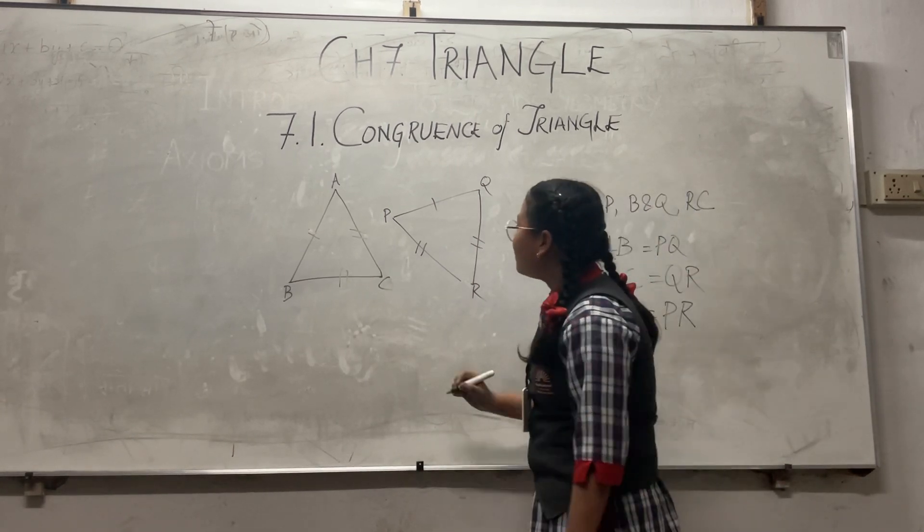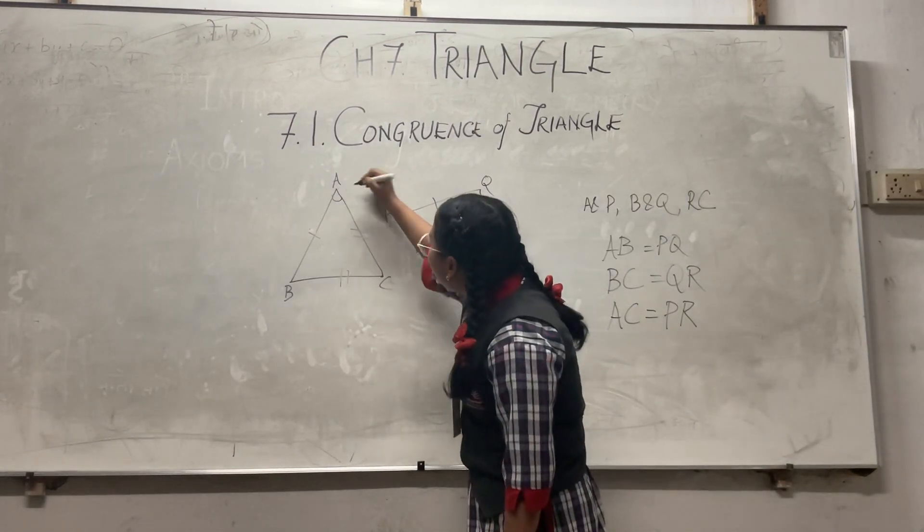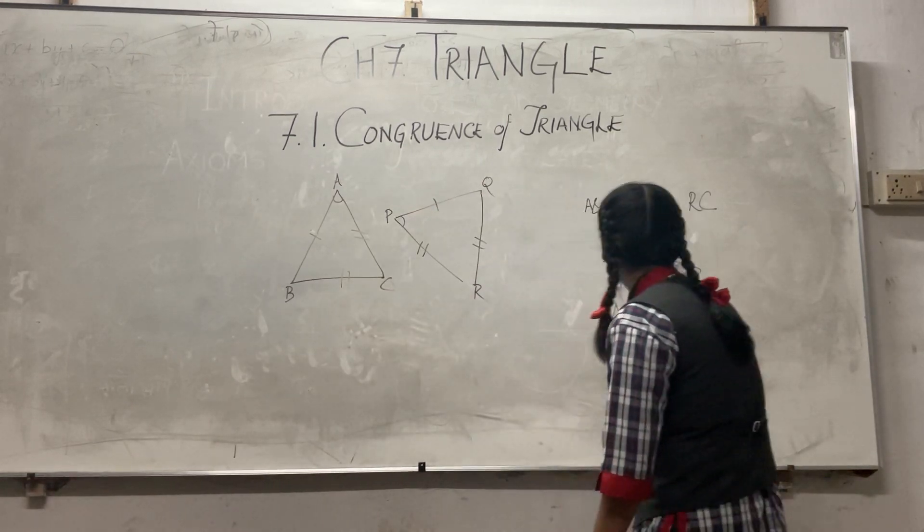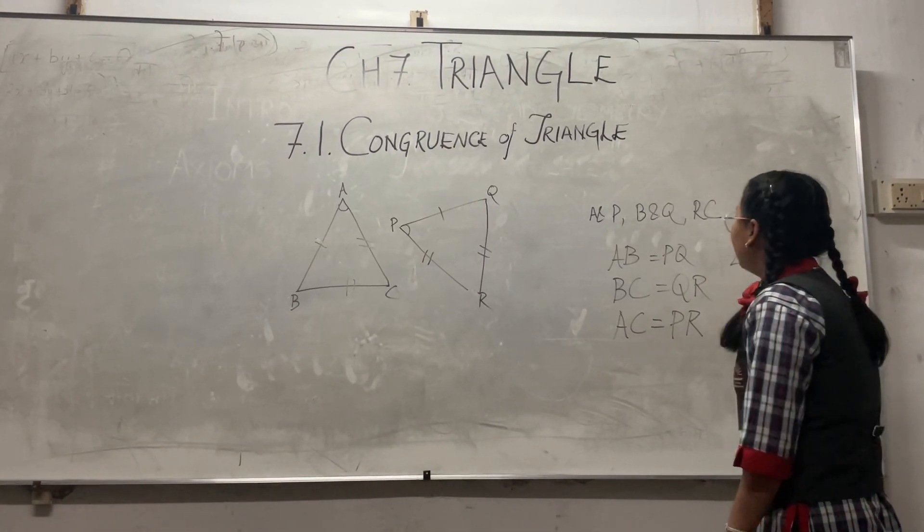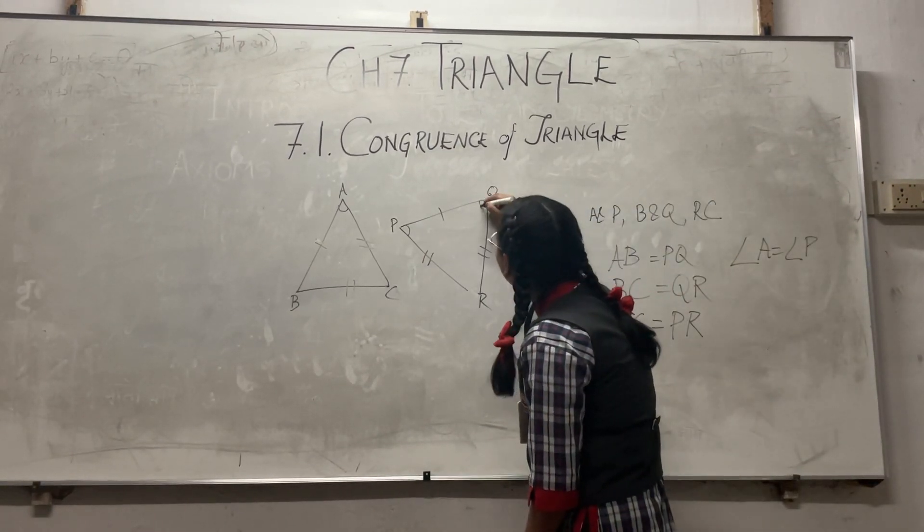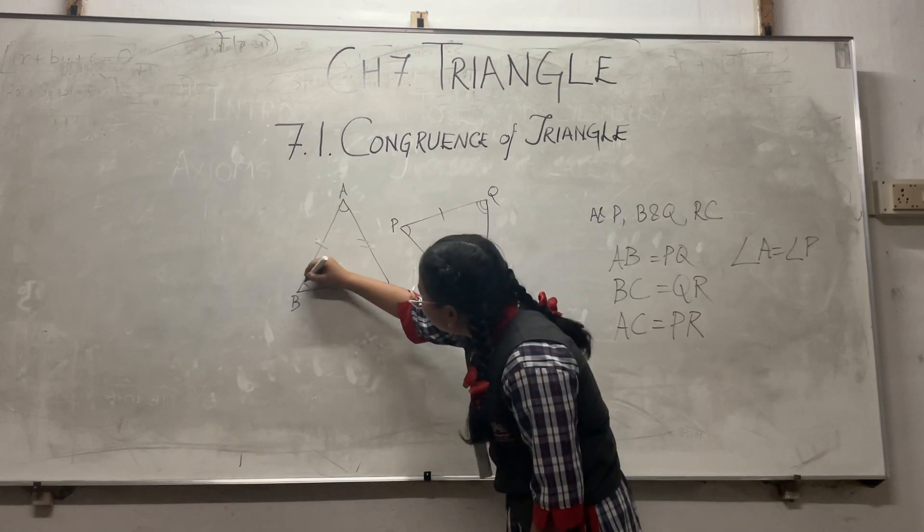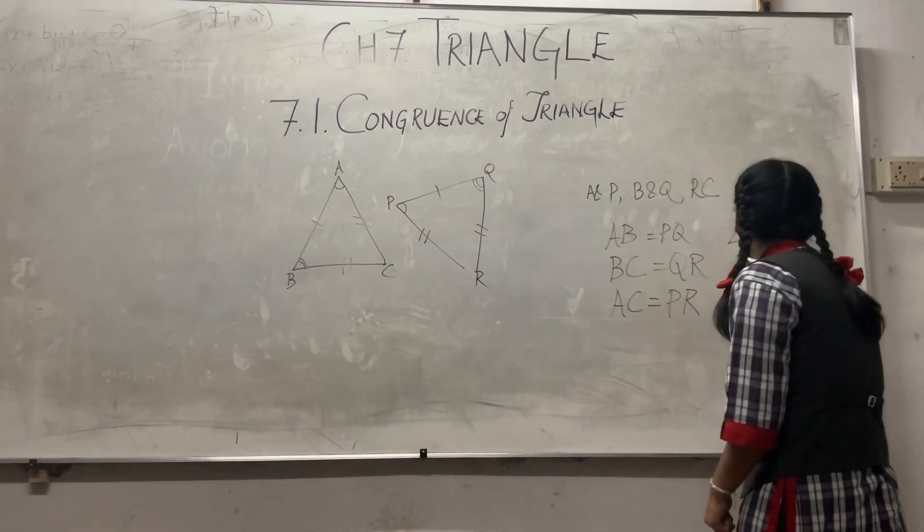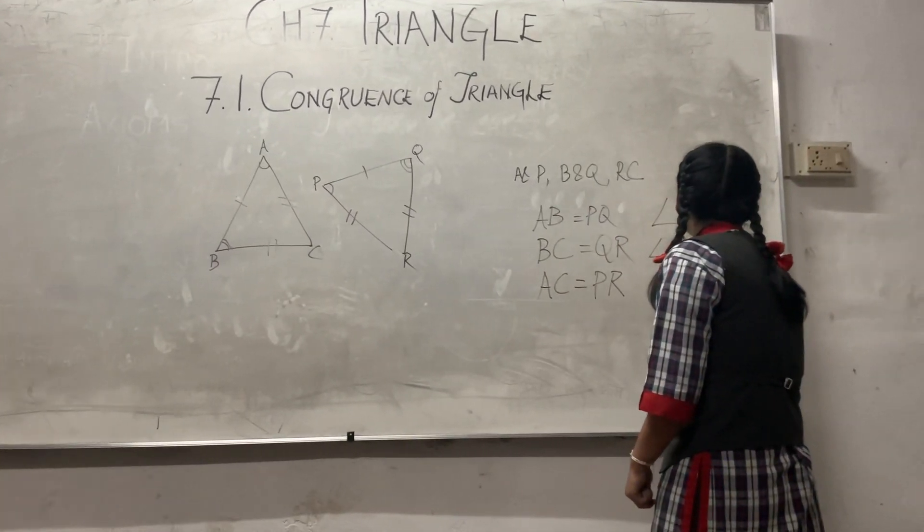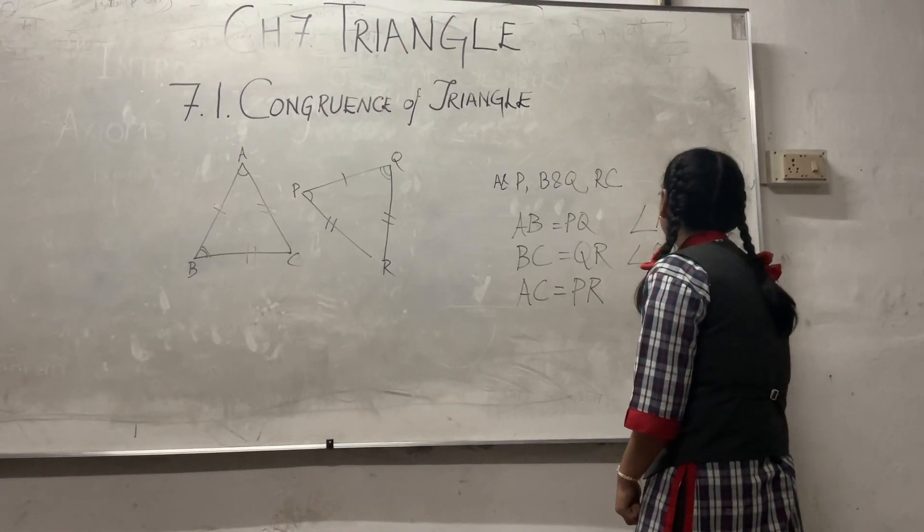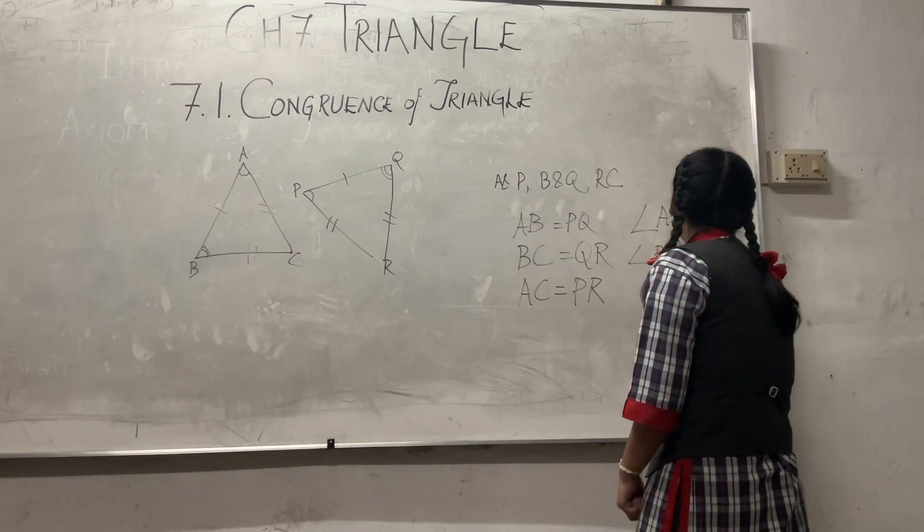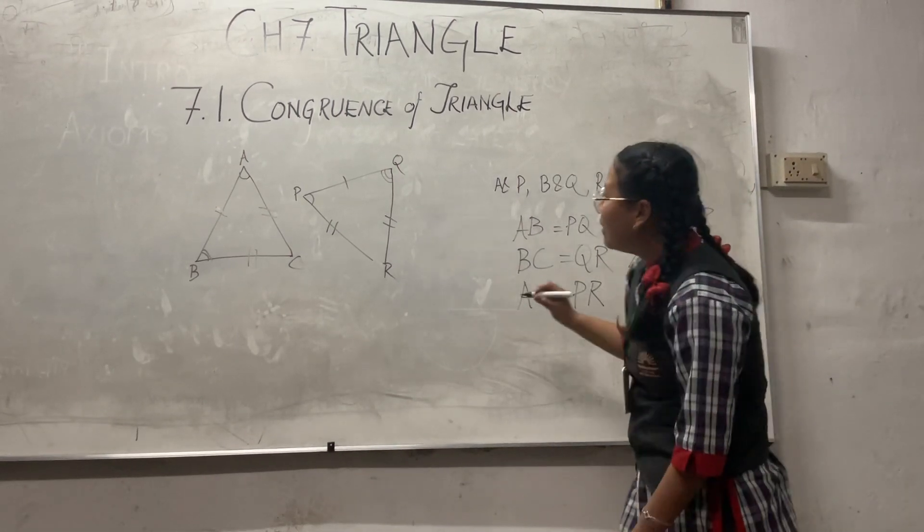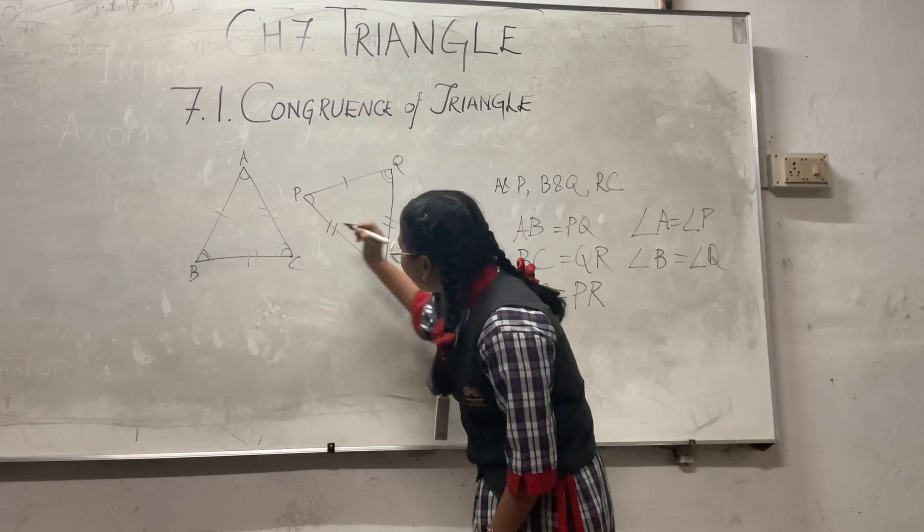And in this given triangle, angle A is equal to angle P, and angle Q is equal to angle B, and angle C is equal to angle R.